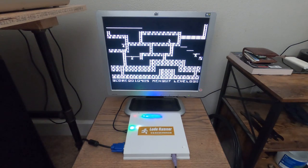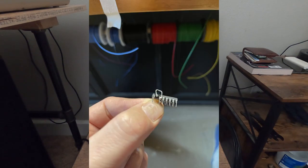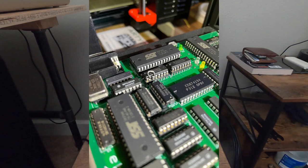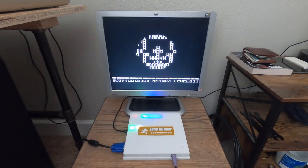What I ended up doing is bending up the A input on the shift register and soldering a bodge wire from the A to the B input. This causes the 8th pixel to match the 7th — so every 8 pixels, 2 of the pixels are the same. Not perfect, but definitely playable for now. In the end, I'll probably rebuild the circuit.